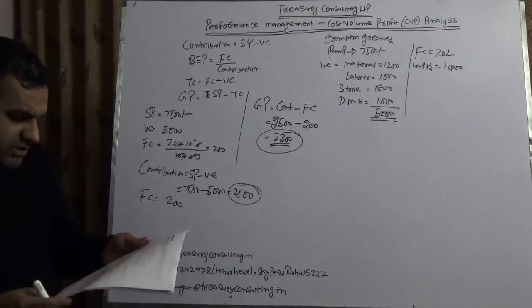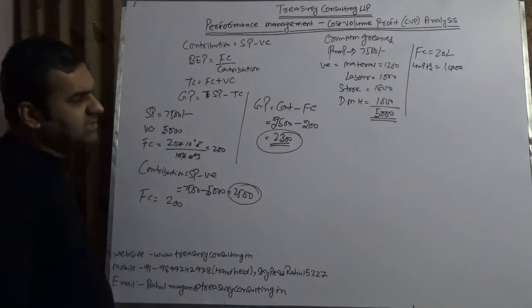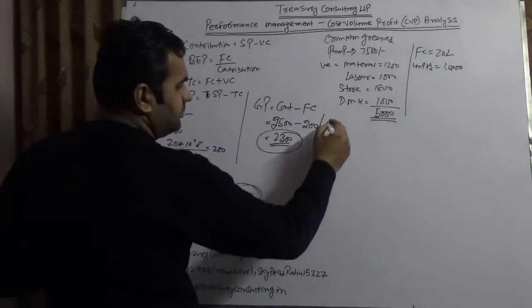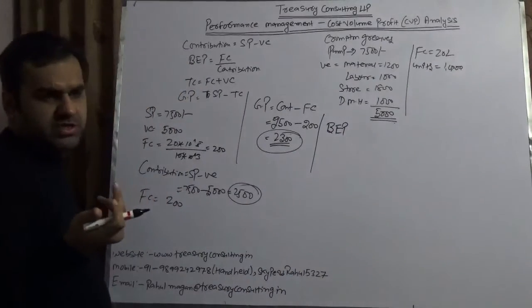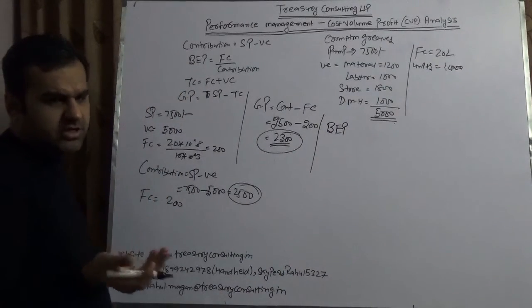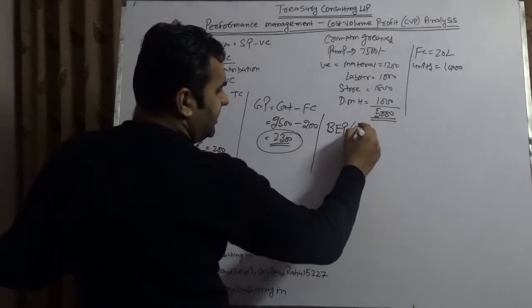Now let us take one more ratio. Let's first calculate the breakeven point. Breakeven point is calculated in two things: one is in unit terms, one is in dollar terms—absolute terms.